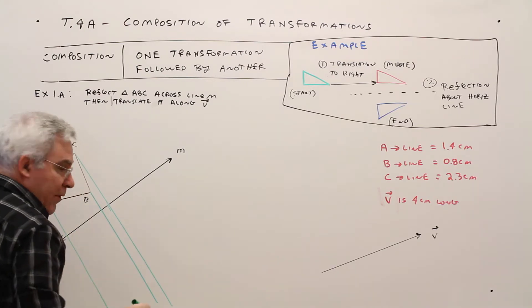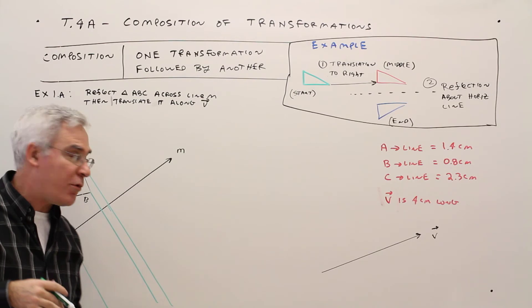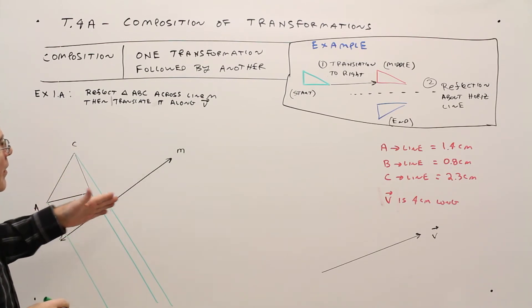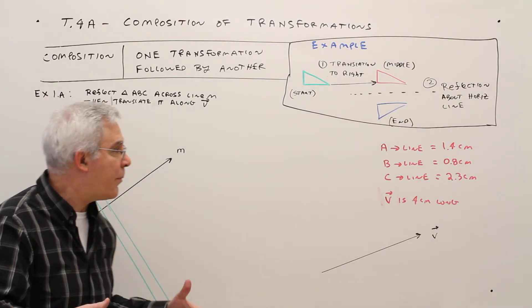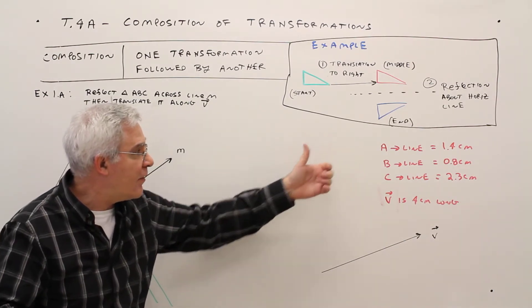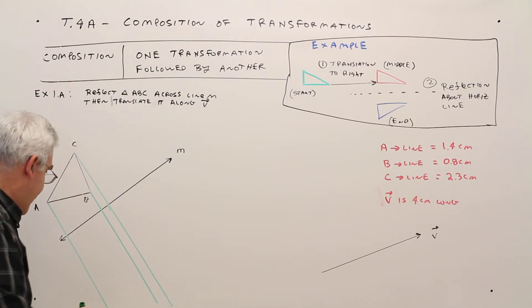Parallel is the key. So by reviewing compositions, we're secretly reviewing previous lessons as well. Okay, so then I measured the distance from A to the line, B to the line, and then C to the line with the ruler on your paper. And I got those distances. So you just want to go that distance beyond.